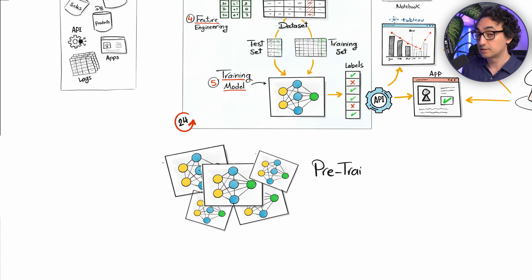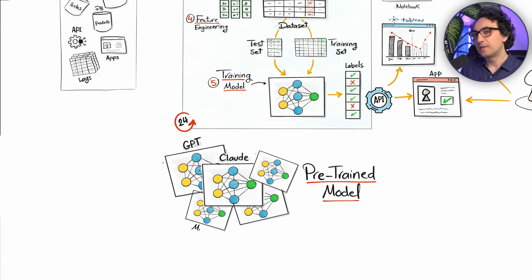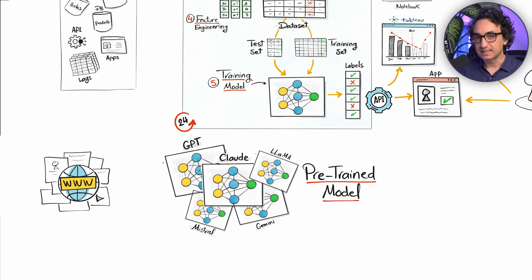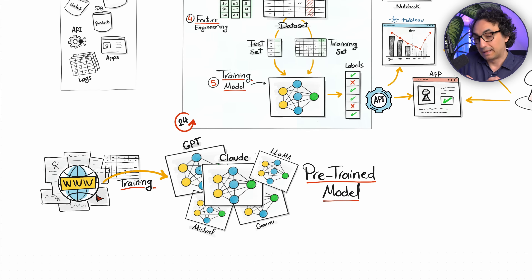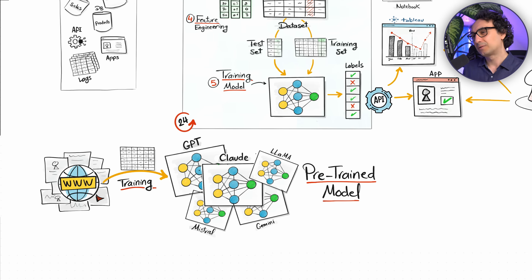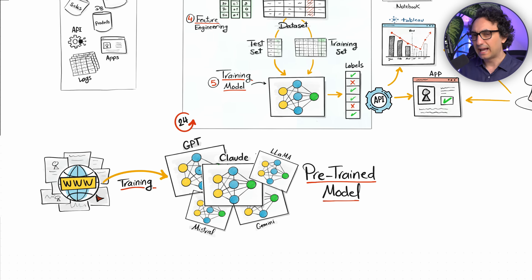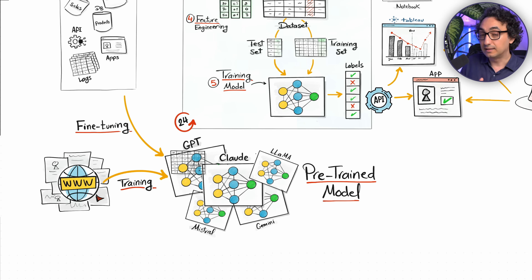But we are now in 2025 and have entered the world of pre-trained models, especially LLMs — Large Language Models like GPT, Claude, Mistral, and others. These models are already trained on massive amounts of public internet data — text, websites, documents — and they already understand language, context, and reasoning. Before, we always had to train models from scratch. Now everything is prepared for you. And if they seem too generic, most allow fine-tuning on your company's specific data.